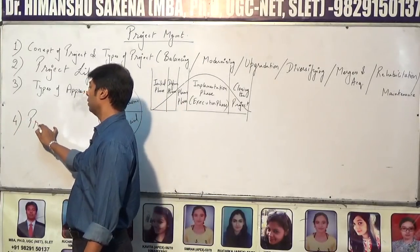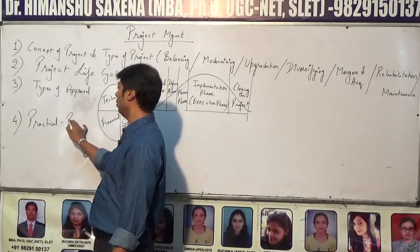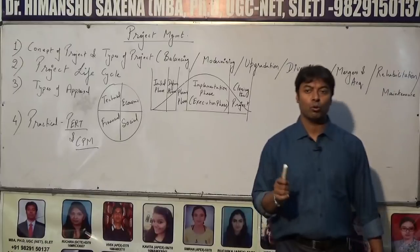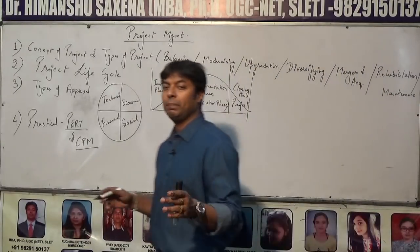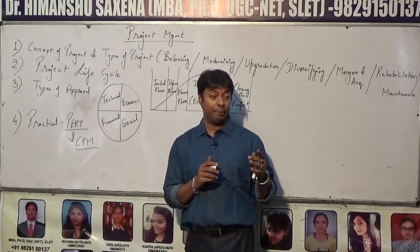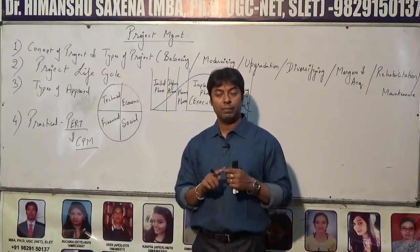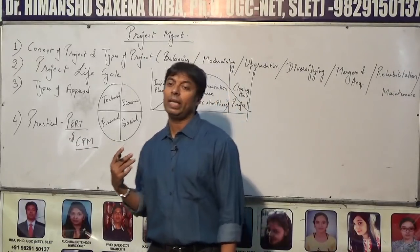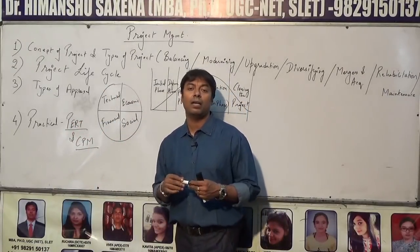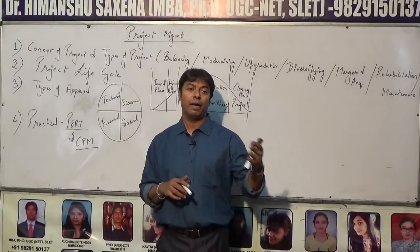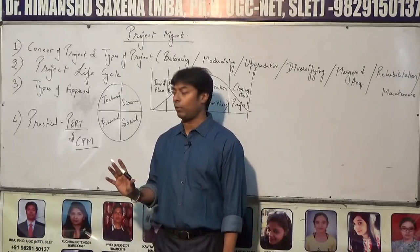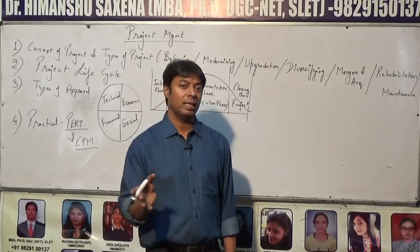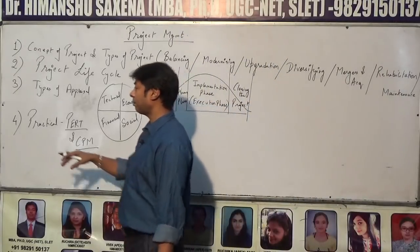Next is an important topic — PERT and CPM. PERT stands for Program Evaluation and Review Technique, where you find out the probability of completing the project within a specific timeframe based on three time estimates: pessimistic time, optimistic time, and most likely time. CPM — Critical Path Method — is based on just one time estimate, where you calculate the earliest start, latest finish, and slack of each event to find the critical path, the backbone of the whole project. You can also do practicals on crashing, which is an indispensable part of PERT and CPM.